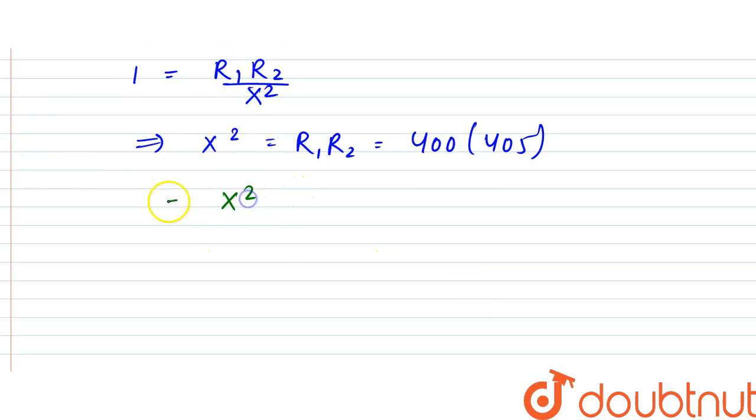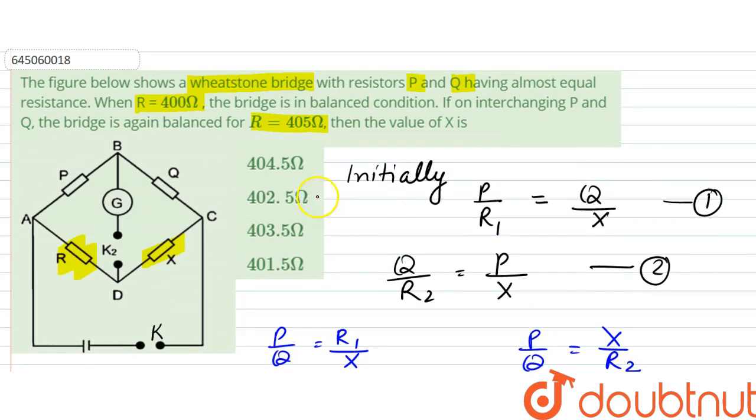When we find X from here, that turns out to be root of 400 into 405. So that approximately turns out to be equal to 402.5 ohms. That is the value of X, so our answer is 402.5, that is option D is our answer. Thank you.